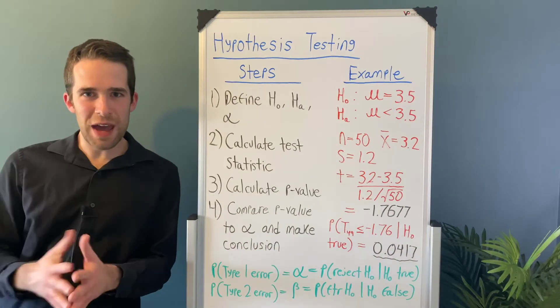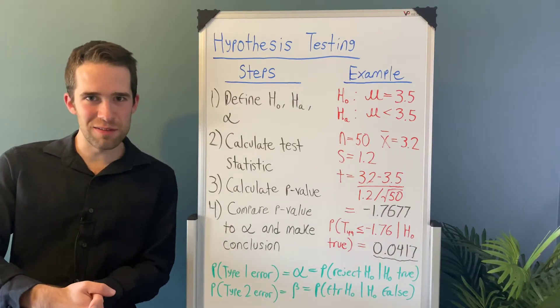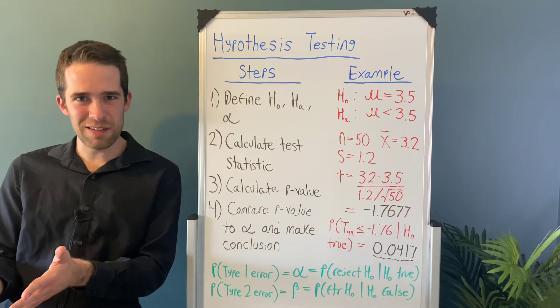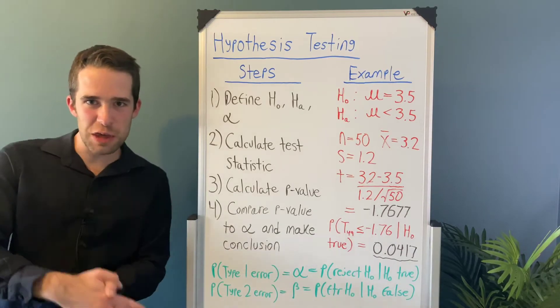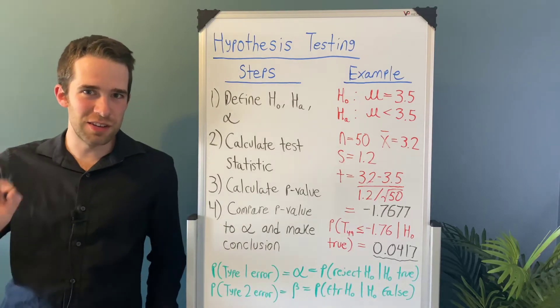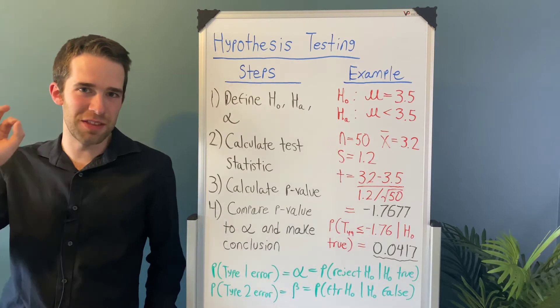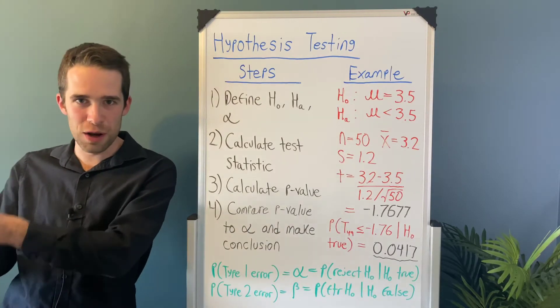First step: we have defining the null hypothesis, the alternative hypothesis, and the significance level. Starting with the significance level here, that's very closely related to the confidence level that you would select if you're making a confidence interval. In fact, the significance level is represented by the symbol alpha, and the confidence level is represented by one minus alpha.